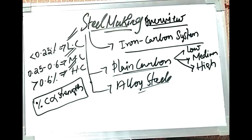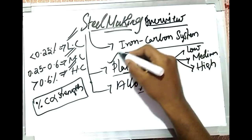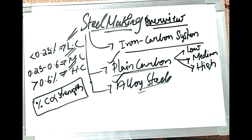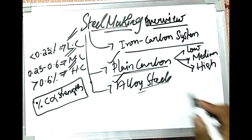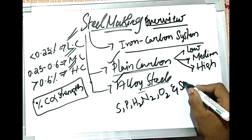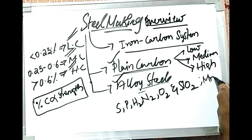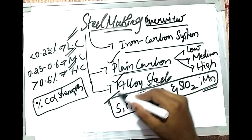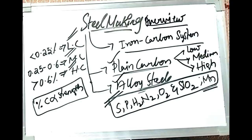Whether the steel is plain carbon or alloy steel, any type of steel contains impurities. Common impurities include sulfur, phosphorus, hydrogen, nitrogen, oxygen, silica (SiO2), and sometimes manganese. In steel making, we study how to control and reduce these impurity contents in the steel.